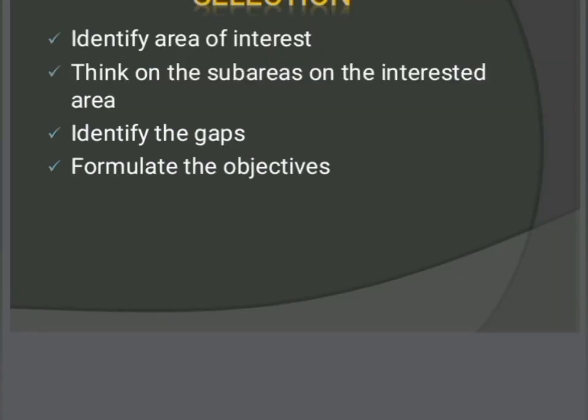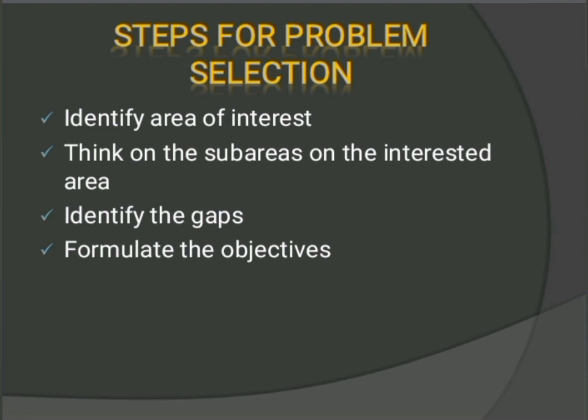After selecting your area of interest, the second step is to think about the sub-areas within that interested area. The researcher must explore the sub-areas of that broad area. For example, if I have an interest in literature, I will go to sub-areas like fiction, short story writing, poetry, or drama. If I have interest in fiction, I will go to novels or short stories. If I have interest in drama, I will discuss absurd drama, Romantic, or Elizabethan drama.